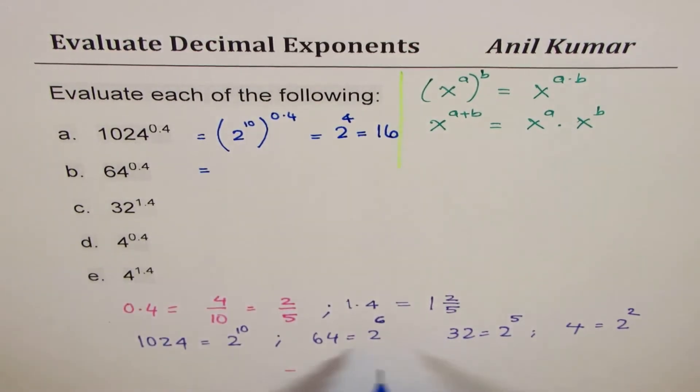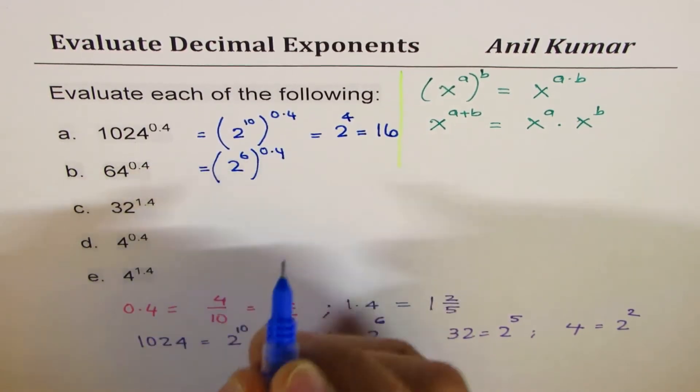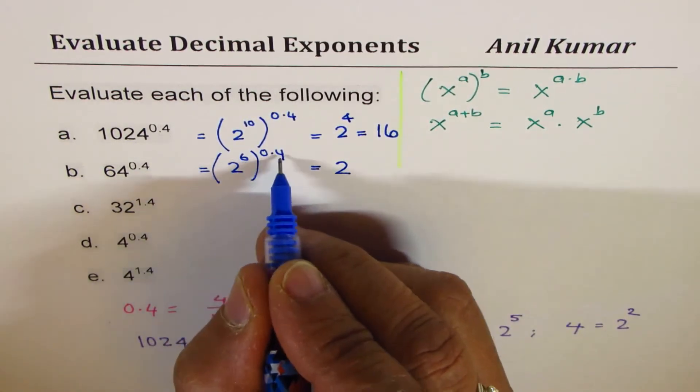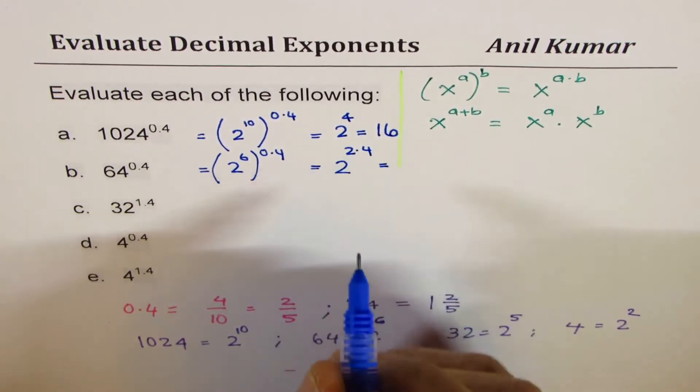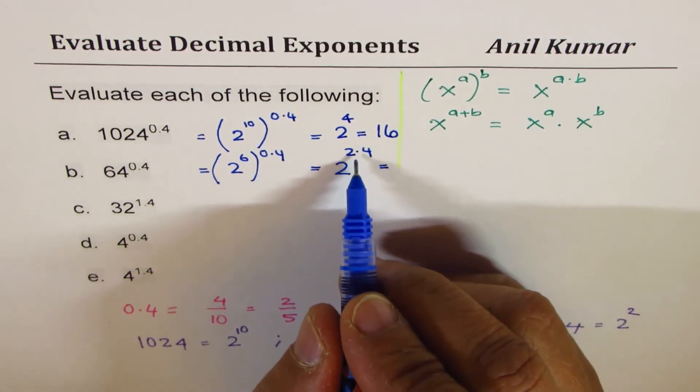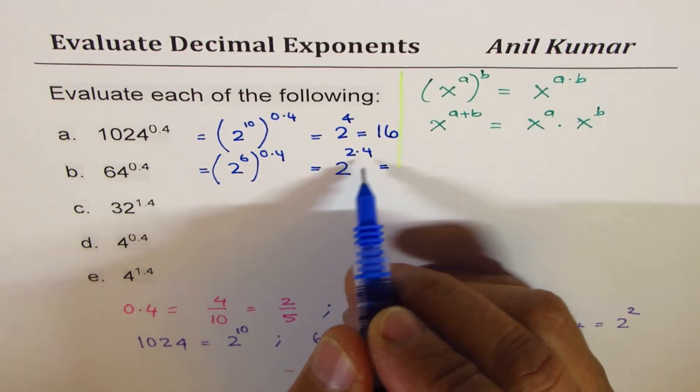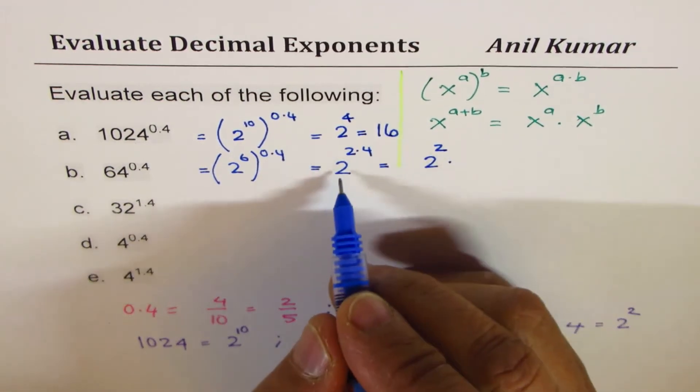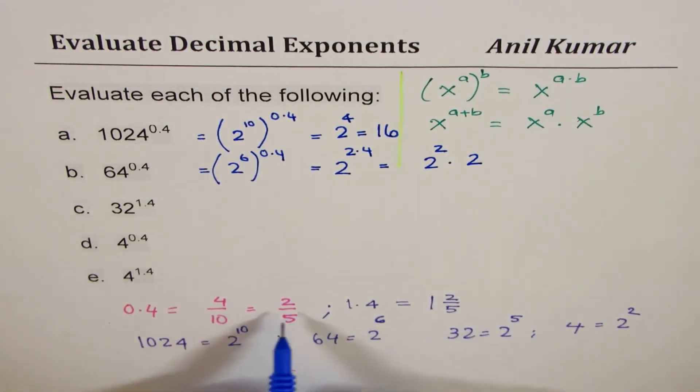Now 64 can be written as 2 to the power of 6. Let me write this as 2 to the power of 6 again to the power of 0.4. You could again multiply this. So you get 2 to the power of 6 times 4 is 24 with one decimal. We get 2.4. Now 2.4 is kind of, this is 0.4, correct? So that means 2 plus 0.4. It means you could write this as the product of 2 squared times 2 to the power of 0.4.